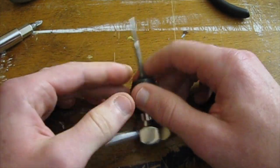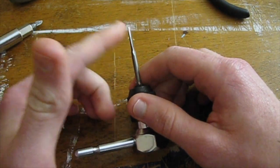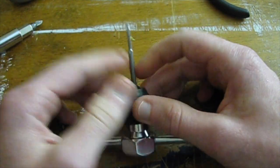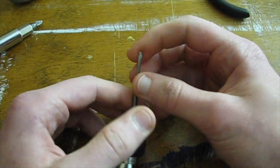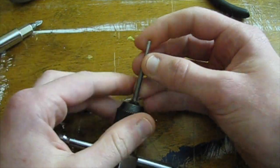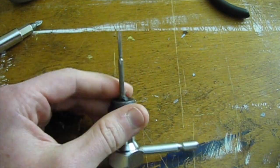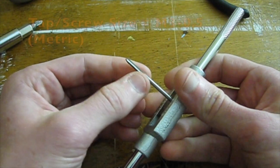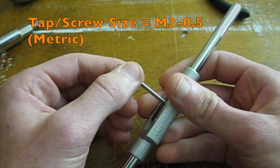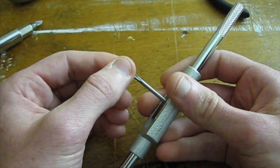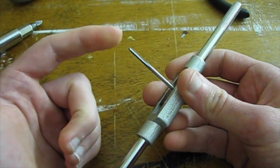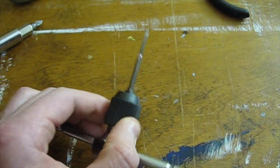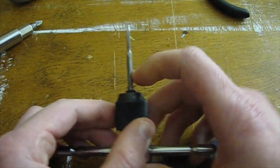And then this one right here, this is a tap number 4-40 for all you US folk out there with a handle. I don't know how available these are in other countries that use the metric system. So if you don't have these where you are, you can also use a M3-0.5 thread tap. They're pretty much the same diameter. The thread count's a little bit different, but US use number 4-40.